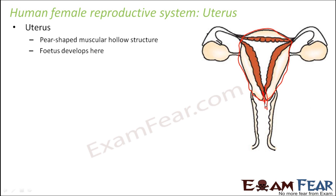One end of the uterus is towards the vagina and the other end is towards the fallopian tube. The overall location of the uterus is towards the dorsal side of the urinary bladder, or you can say the front side of the rectum, through which undigested food materials are expelled.